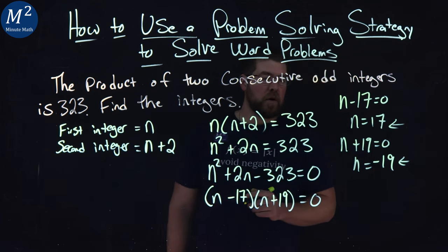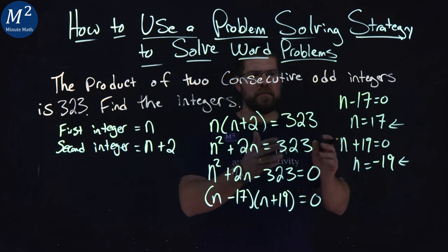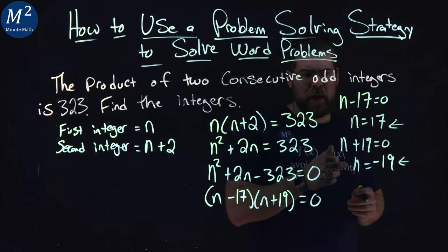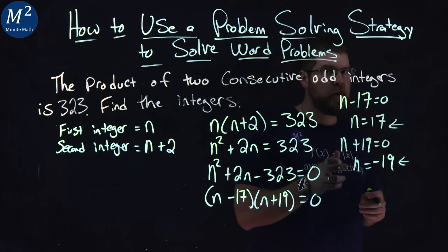So these are the two values we want to work with. Notice, these aren't our answers here, okay? This is what possibly n could be.